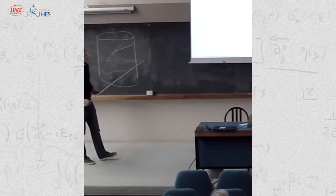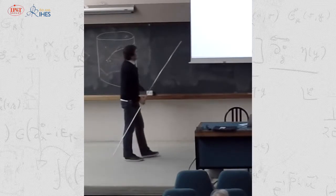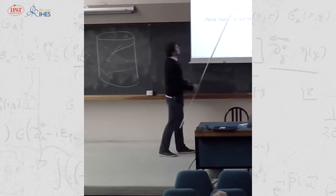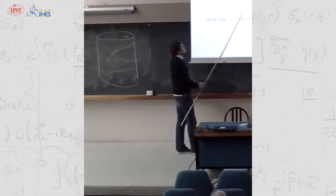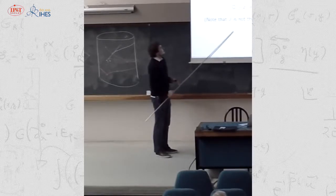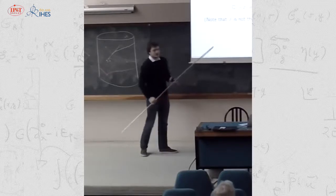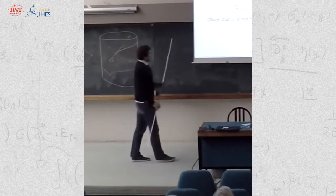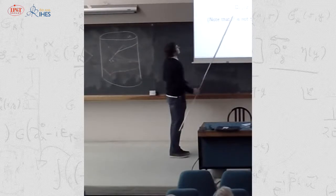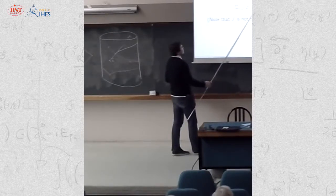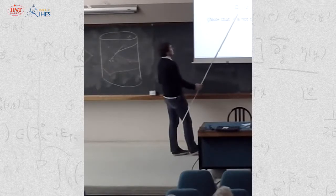Fortunately, we have our Knapp-Stein intertwining operators, and there is an improved proposal: that our families reduce not to local operators but instead to light transforms of local operators at integer spins. This doesn't contradict the observations because the light transform of a local operator is non-local and we established it annihilates the vacuum state. Notice also that in this proposal J is not the spin of O, because the light transform swaps dimension and spin — so 1 − J is the dimension of the underlying local operator, not its spin. The spin is still generically continuous and non-integer.